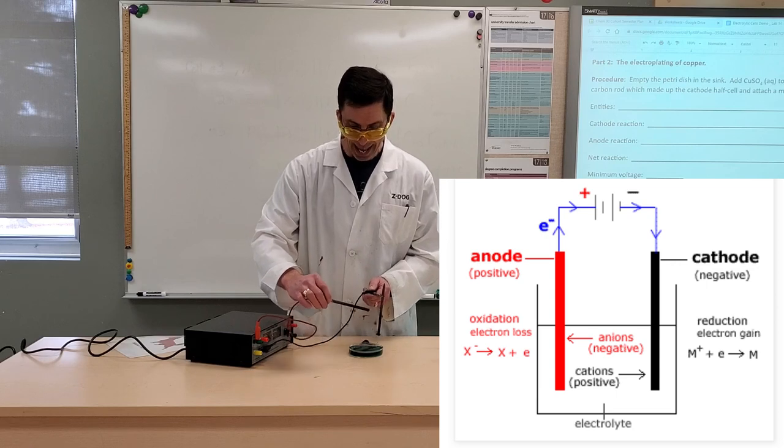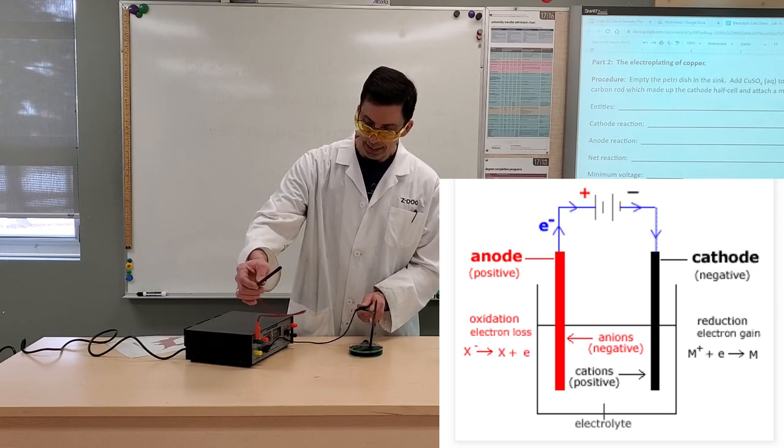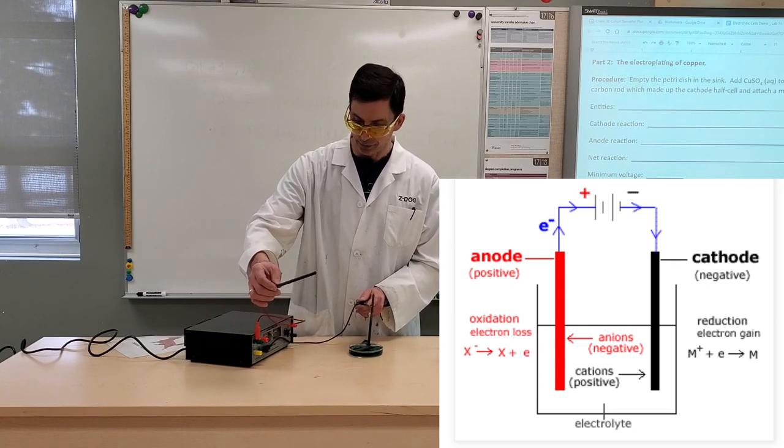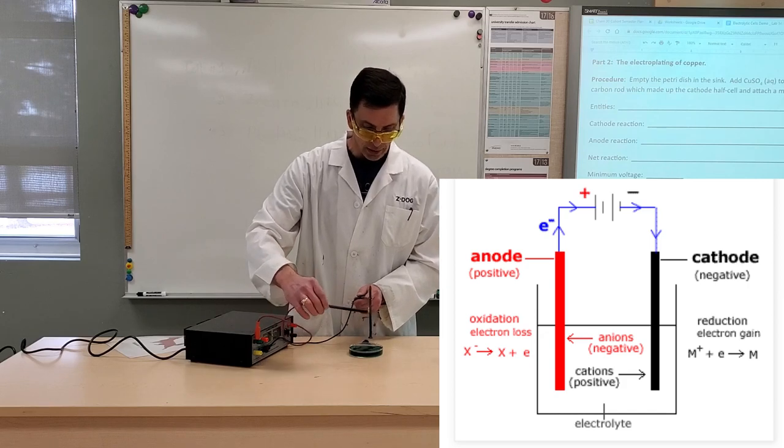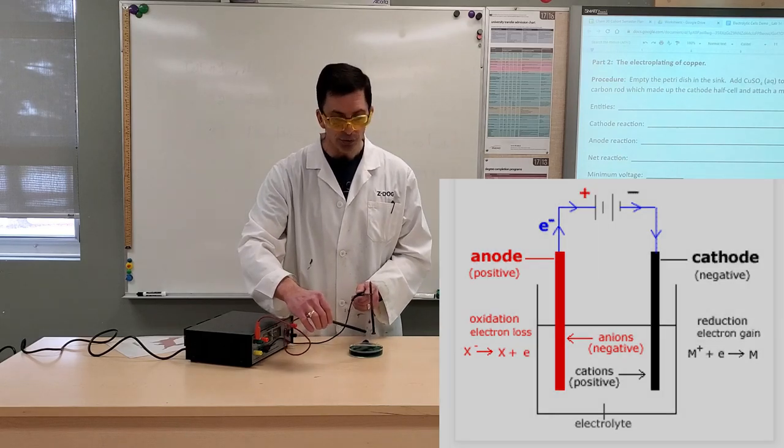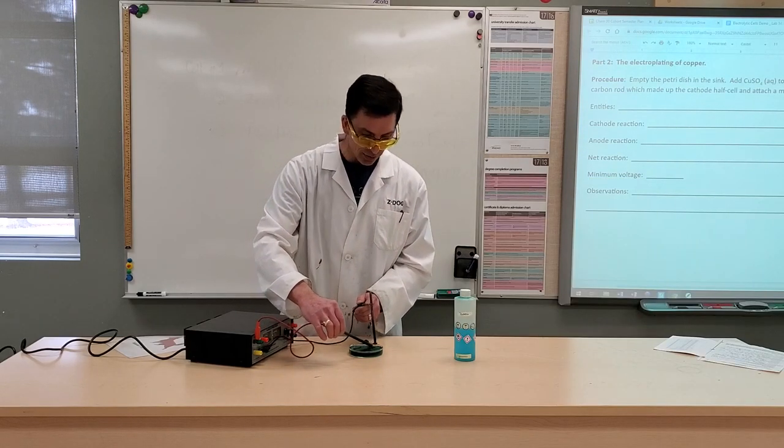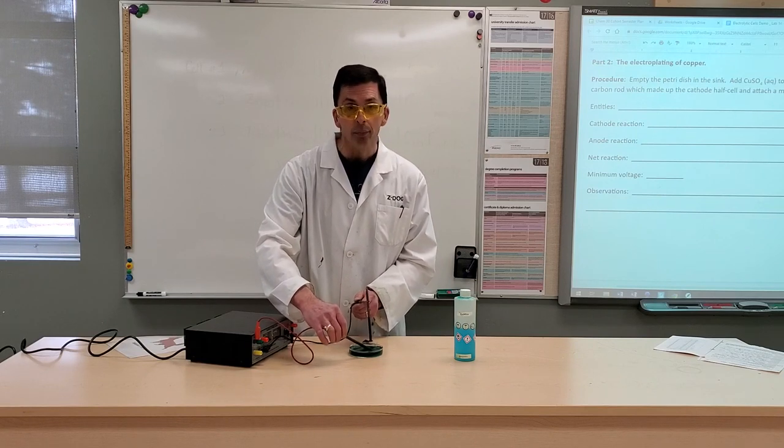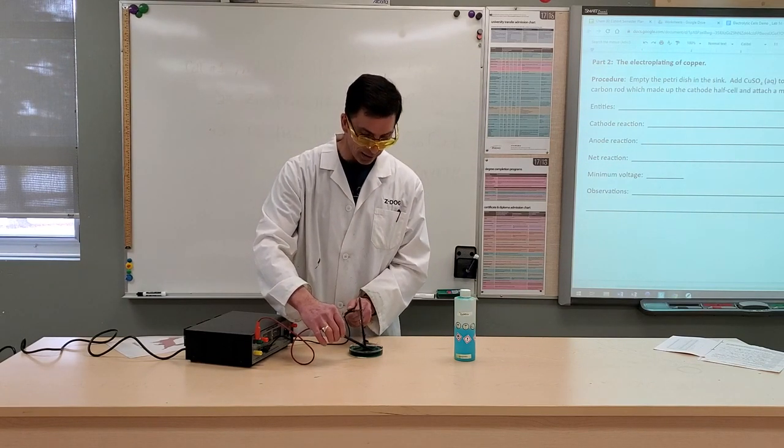We have our anode now is connected to the positive terminal. So the labels for positive and negative is opposite when comparing these electrolytic cells to voltaic cells.